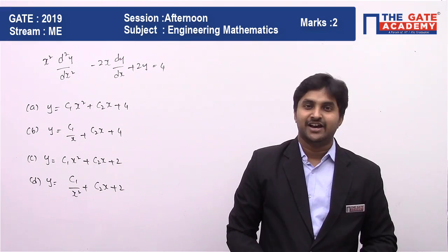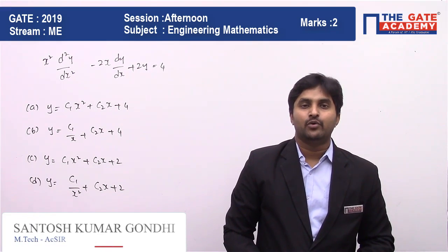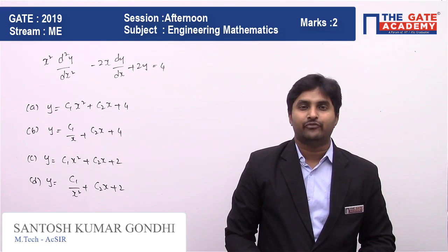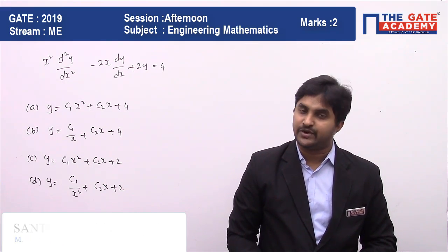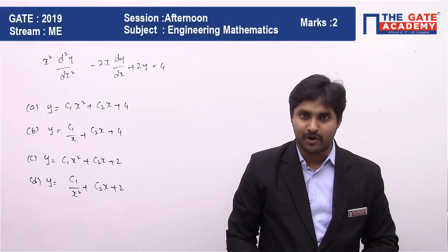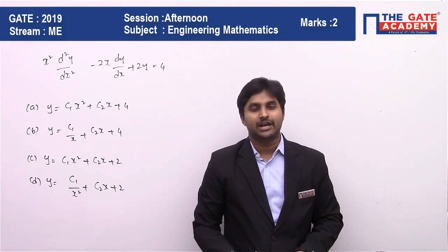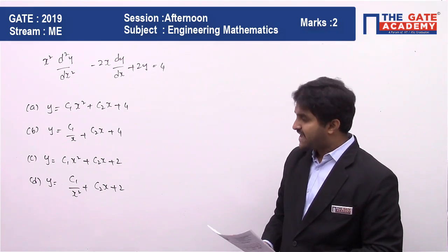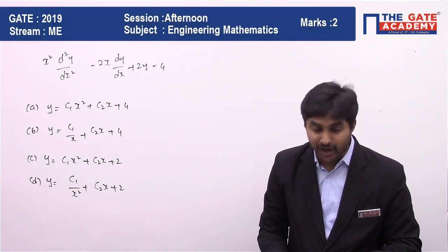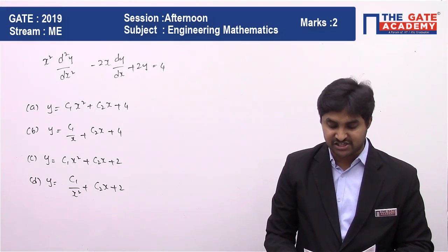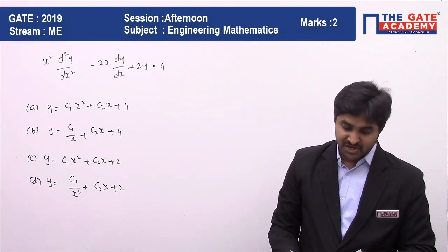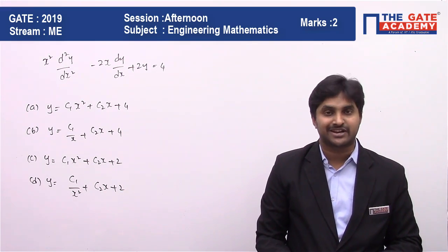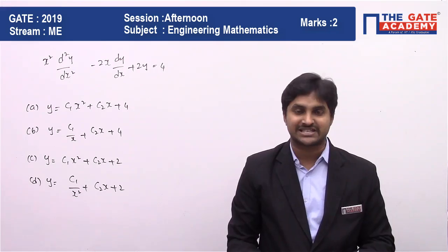Hello students, I am Santosh. In this video, we are going to see a question from engineering mathematics on the topic of differential equations. Let me read the question: a differential equation is given as x² d²y/dx² minus 2x dy/dx plus 2y equals 4. The solution of the differential equation in terms of arbitrary constants c1 and c2 is?